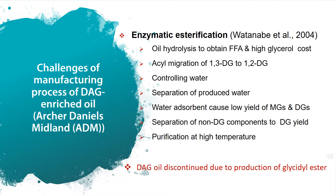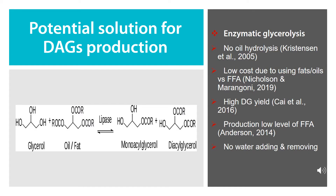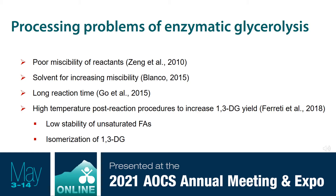Now, how can we overcome these drawbacks? Enzymatic glycerolysis is a potential solution for DAG production due to many advantages. For example, we can use natural oils or fats instead of free fatty acids, so there is no need to hydrolyze oil before the reaction. Another advantage is producing higher DG yield versus esterification. However, enzymatic glycerolysis also suffers some problems — most of them are related to poor miscibility of reactants, long reaction time, and high-temperature post-reaction procedures to increase 1,3-DG level.